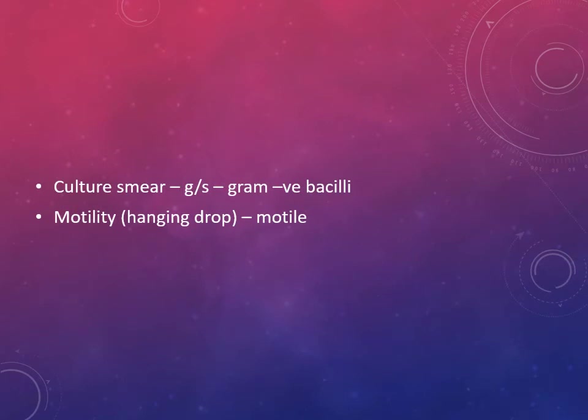Once you get growth on the plate from blood culture, which is the most preferred route of isolation, and you get colonies on blood agar or MacConkey agar plate, the next steps are: first, make a smear and do gram staining from the culture - you will get gram-negative bacilli. Next, check motility using hanging drop preparation - you will get motile bacilli.